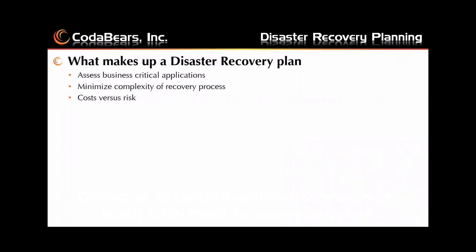So I want to talk about what makes up a disaster recovery plan. Each company is going to have its own unique requirements for storage of data and business-critical applications. First, you're going to need to assess all of your business-critical applications and determine what your priority is to get up. Is there an order? Do things rely on each other? Developing a good plan will take all of these requirements into consideration, along with the risk associated with downtime. This will assist in minimizing complexity of the recovery process in the event of a disaster.